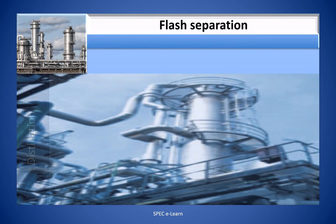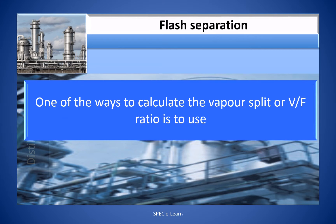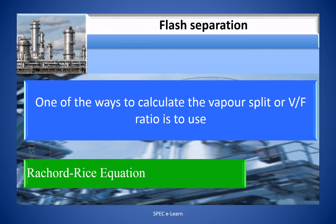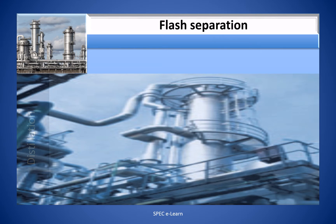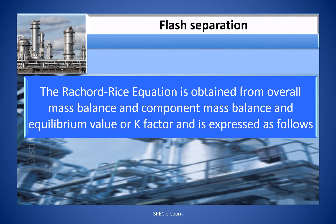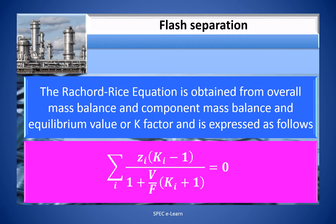One of the ways to calculate the vapor split or VF ratio is to use the Rachford-Rice equation. The Rachford-Rice equation is obtained from the overall mass balance, component mass balance, and equilibrium K-value, and is expressed as: Sigma (i=1 to N) of Z_i times (K_i minus 1) divided by 1 plus (V/F) times (K_i minus 1), equal to 0.